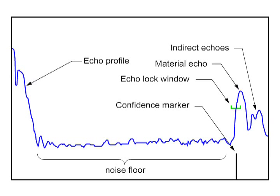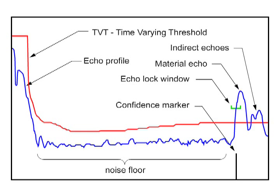Finally, we have this red line. The red line is our dynamic TVT curve. The TVT or time varying threshold curve is a mathematically constructed curve to help select the true material echo.